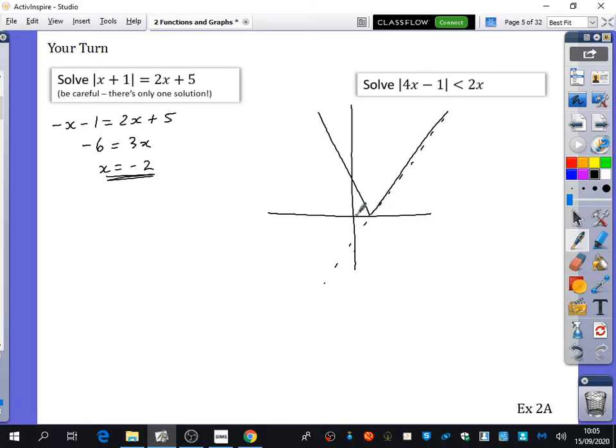And then we've got another graph, which is y equals 2x, which is going to be less steep, going through the origin. So we can see it's going to cross in two different places, so I need to find out the values here and here. I'm going to solve 4x minus 1 equals 2x, the non-negated version, which gives me 2x equals 1, or x equals a half.